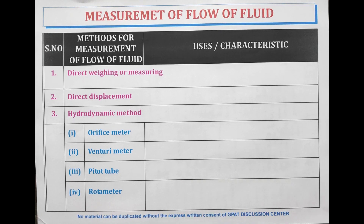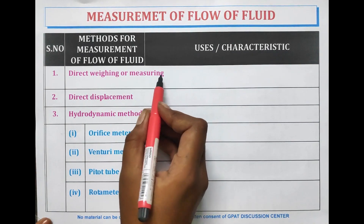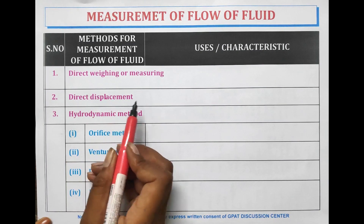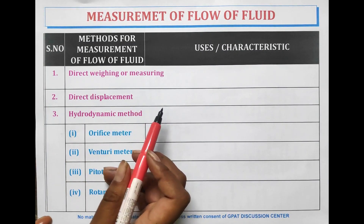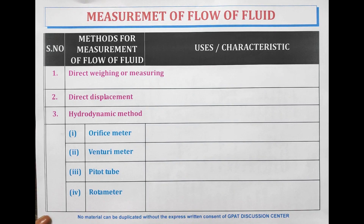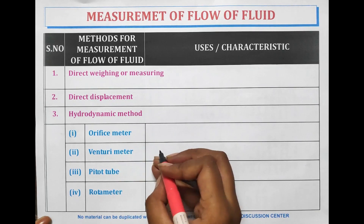Methods to determine the type of flow of fluid: the first method is direct weighing or measuring method, another is direct displacement method, and the third method is the hydrodynamic method. The hydrodynamic method is further categorized into orifice meter, venturi meter, pitot tube, and rotameter.